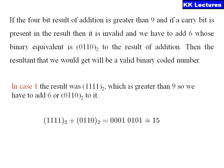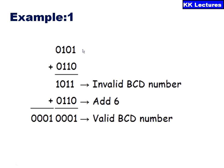Example one: 0101 is BCD for decimal five and the other number is equivalent to decimal six. When I add five and six I need to get eleven. The result I get is not a valid BCD code, so I add 0110, which is six, and I get the result as 0001 and 0001 — in BCD each digit is expressed in four-bit binary. So this is one and this is one, confirming five plus six equals eleven, which is a valid BCD result.